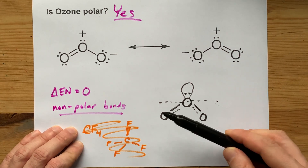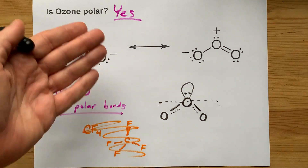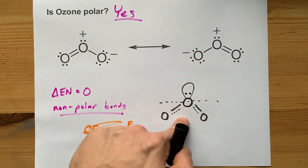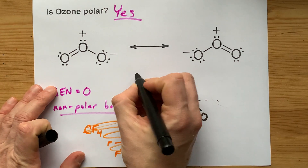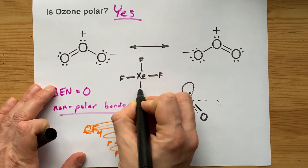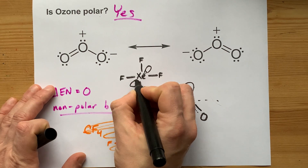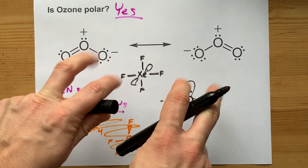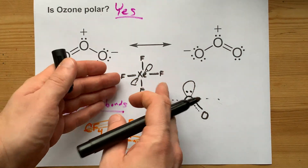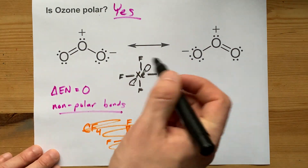My new rule is: if you have a lone pair on the central atom of a molecule, it likely is polar — unless you happen to have a second lone pair symmetrically arranged on the other side of the molecule, which we definitely don't have here. For example, in XeF4, there are four polar F bonds, and then a lone pair on the top side and another lone pair on the bottom side. Because those two lone pairs cancel each other out, XeF4 would also be non-polar. But ozone doesn't have that second lone pair to cancel out the lone pair on the central oxygen, and therefore is polar.